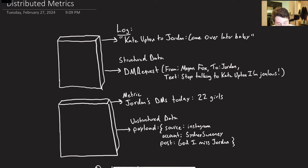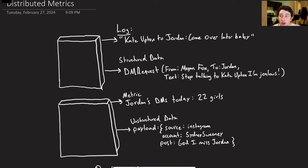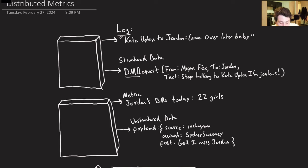Number two is structured data. Imagine we have some object — let's say our server is in Java and we have some Java object. We manage to serialize it in a way that keeps the fields of the object around, and then we can put that in some sort of database. These get published pretty frequently.